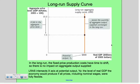Now let's talk about the long run supply curve. Why is it vertical? The difference between the short run and the long run is that in the long run, fixed price production costs have time to shift, so there's no impact on aggregate output supplied.